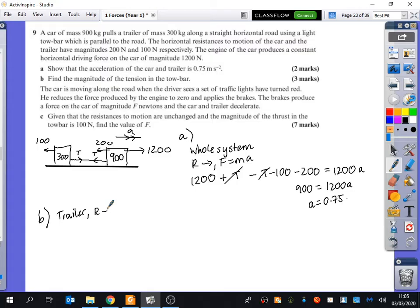I'm still going to be resolving to the right using F equals MA. So I have T minus 100 equals the mass times the acceleration, which we've just worked out is 0.75. So we get T equals 300 times 0.75 plus 100, which is 325 newtons.